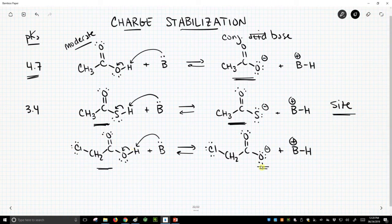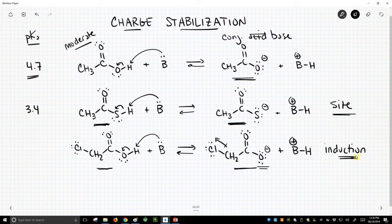We get this anion, and we would expect that this particular conjugate base would be stabilized somewhat by this polarized carbon halogen bond, carbon-chlorine bond, and this would be an inductive effect. So here we have not a size effect, but induction, polarization of that carbon-chlorine bond.